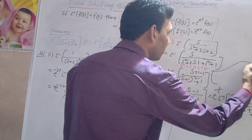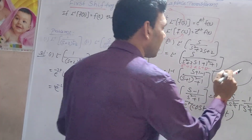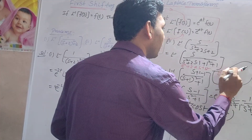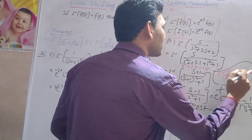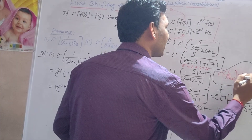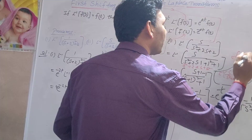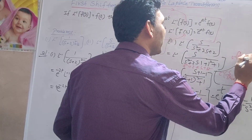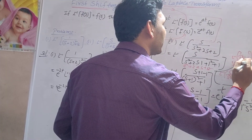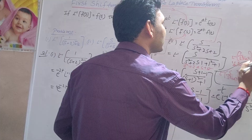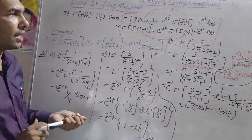So the formulas used are: L inverse of s/(s²+a²) = cos(at), and L inverse of 1/(s²+a²) = (1/a) sin(at). Using these, L inverse of s/(s²+2s+2) = e^(minus t) into (cos t minus sin t). Ok?